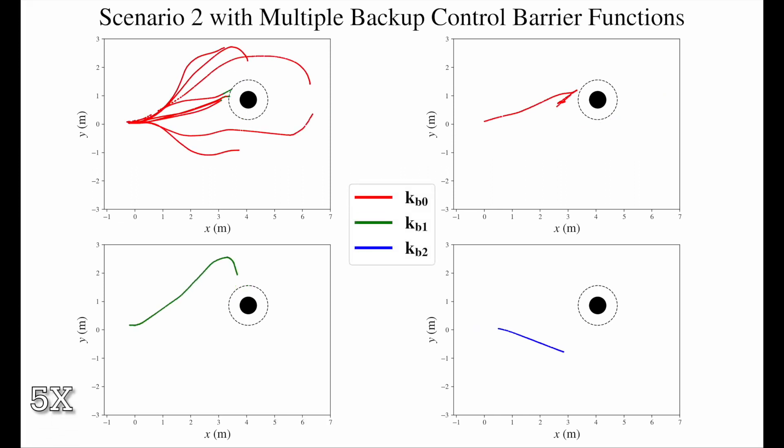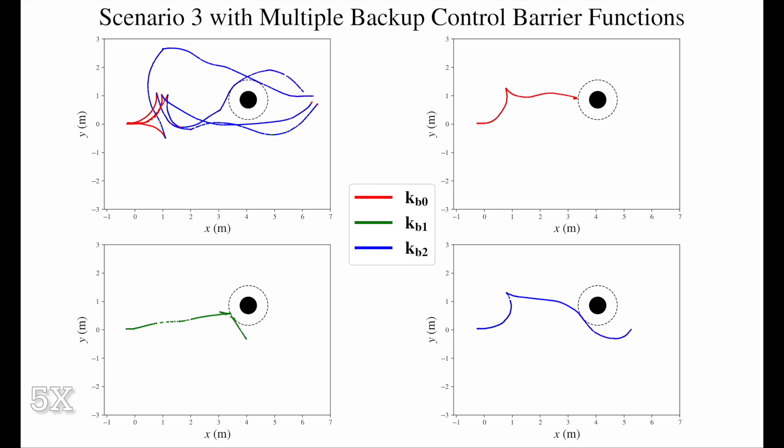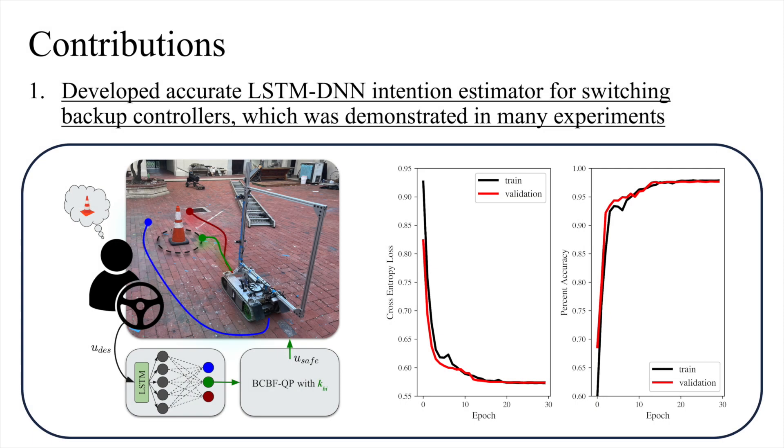In the next example, when we wish to stop close to and face the obstacle, our learnable switching law chooses KB1, a controller that has high reachability close to the obstacle. Finally, our learnable switching law also maintains gentle corrections compared to the other controllers when the robot moves backwards. In all cases, our learnable switching law does not choose controllers that would result in interruptions to the driver's intended path.